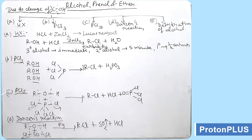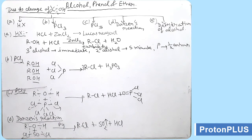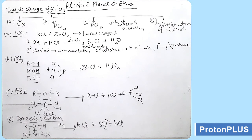Next, reaction with PCl5, phosphorus pentachloride: ROH reacts with PCl5. Cleavage of the RO bond gives the RCl molecule; cleavage of the OH bond gives HCl. Then two bonds of PCl5 break and form bonds with the oxygen atom, giving POCl3, phosphorus oxychloride. The products are RCl, HCl, and POCl3.